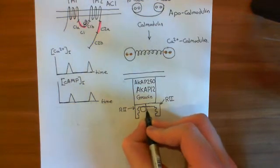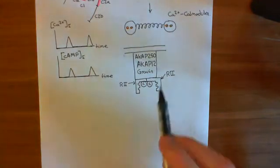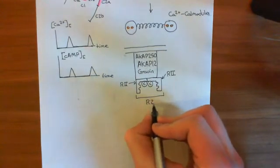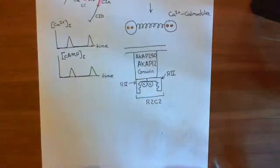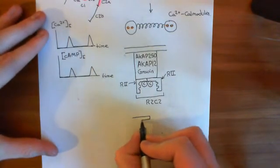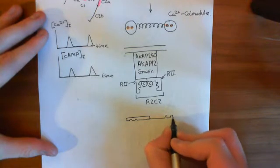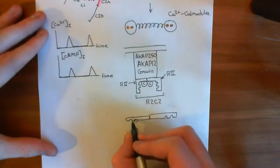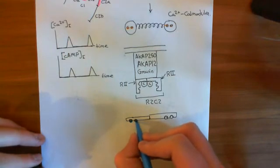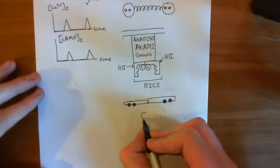Protein kinase A usually exists as an R2C2 complex — two regulatory subunits and two catalytic subunits. When the catalytic subunits are bound to the regulatory subunits, they are inactive. When cyclic AMP goes up, the regulatory subunits change conformation: cyclic AMP binds to four cyclic AMP binding sites on the regulatory subunits, and the catalytic subunits are released. When released from the regulatory subunits, they become active.